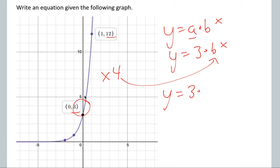So y equals 3 times 4 to the x. Now again, the reason that it's shooting up very quickly is because this 4 is a pretty big number if you think about what that 4 represents.